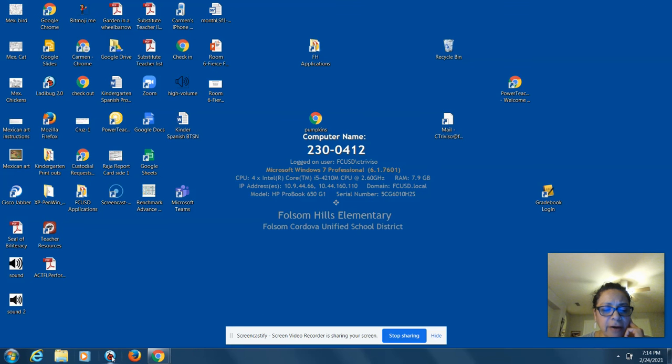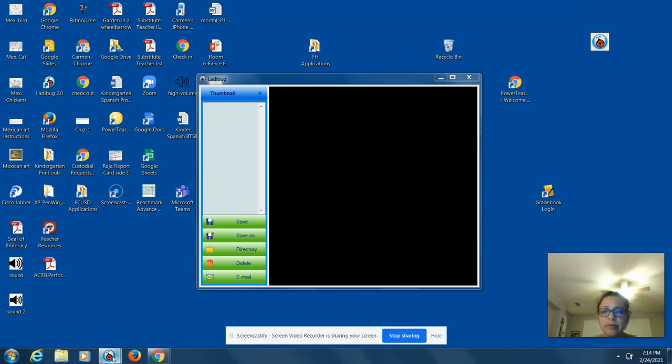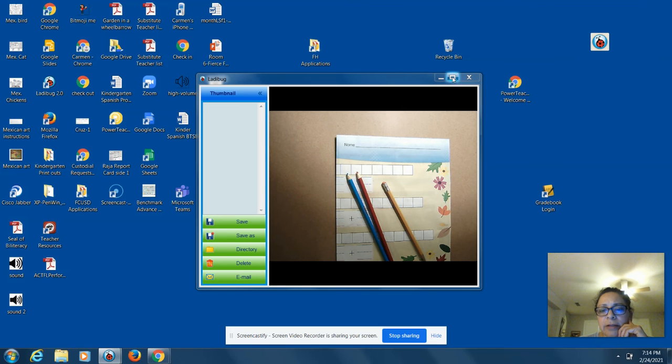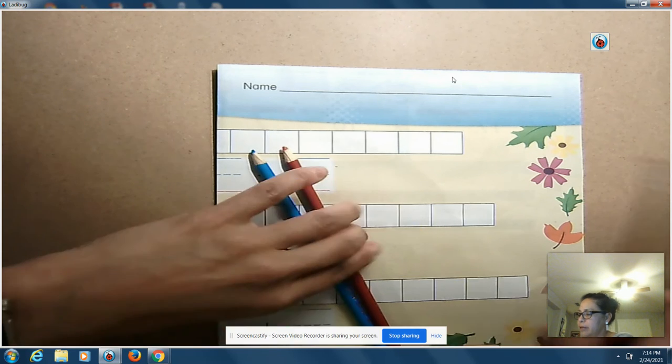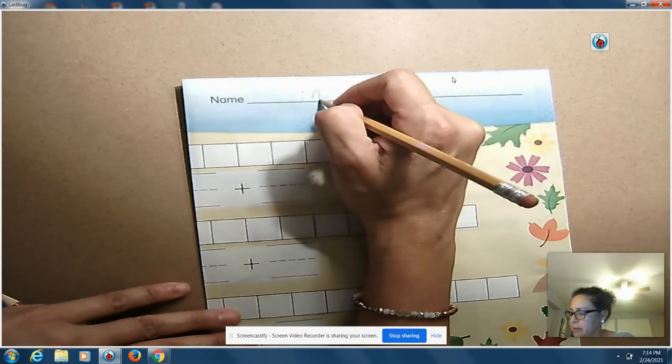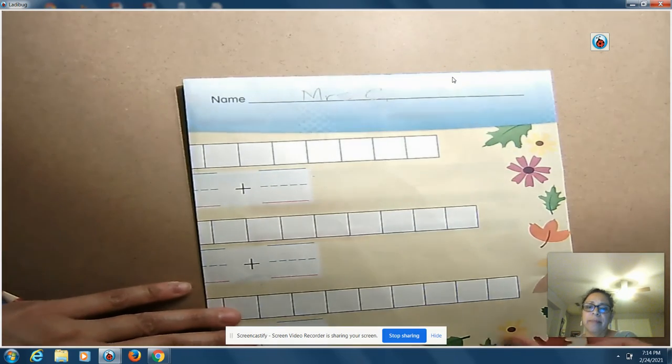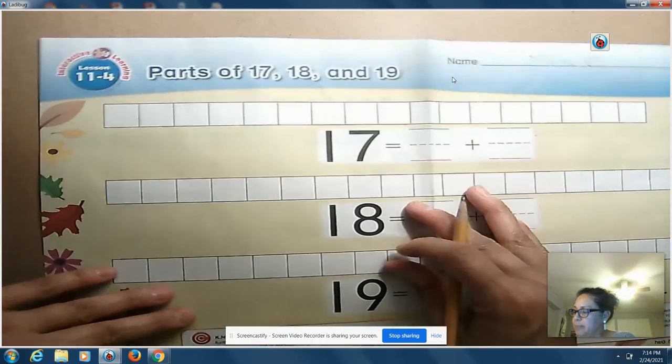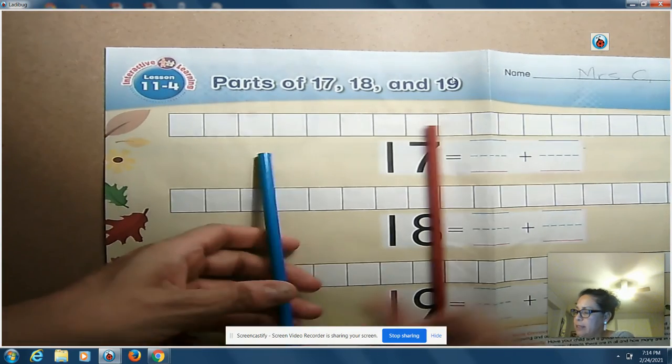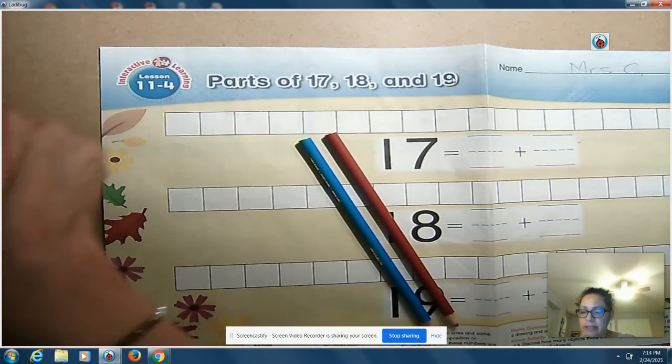All right, let's take out our pencil or crayons, red and blue, and your paper. Let's write your name on the top here. Okay, and then we're gonna be using these kind of like when we use our counters in class.